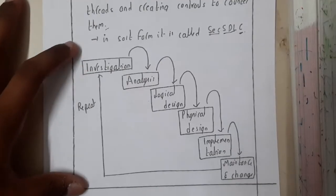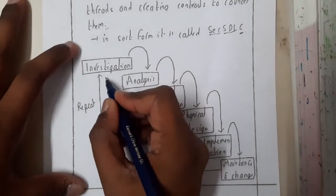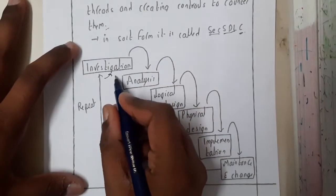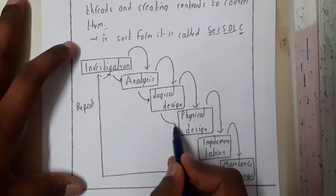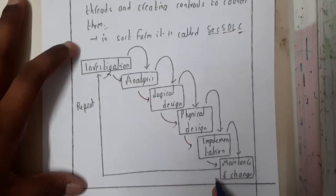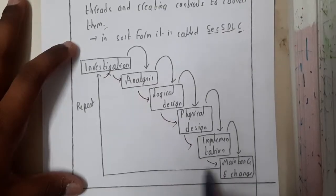If you ask me what are the steps, so these are the steps. Initially you will be doing some investigation, then you will do some analysis on that, you will be creating some logical design, then you will be doing the physical design, then implementation, after that maintenance and changes. Again you will be checking and again you will be investigating and this process will continue.